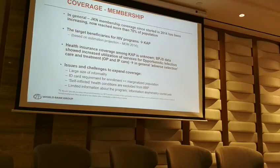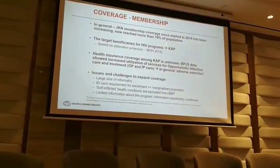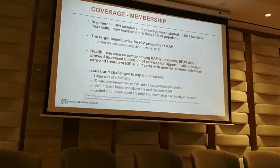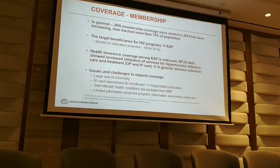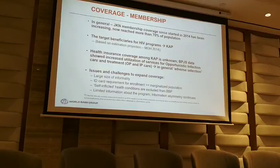The JKN now covers about 70% of the population. We hope that key populations are already receiving benefits. However, there are challenges: the large size of informality means most key populations don't have ID cards, and self-inflicted health conditions are excluded from JKN. For example, people who inject drugs in Indonesia cannot access UHC, because the government considers that they brought harm upon themselves and therefore don't have the right to receive benefits.